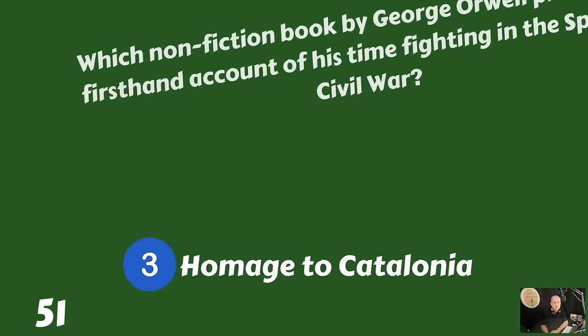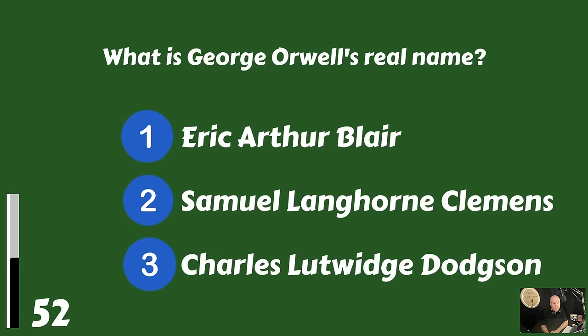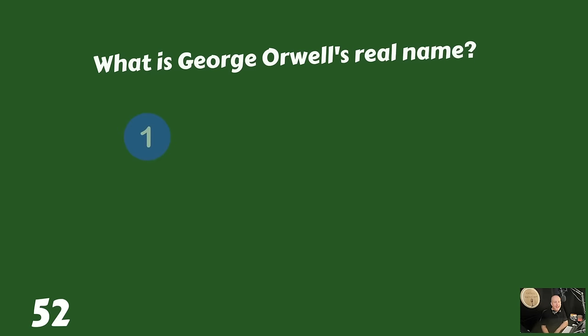What is George Orwell's real name? Eric Arthur Blair, Samuel Langhorne Clemens, or Charles Lutwidge Dodgson? That is Eric Arthur Blair.